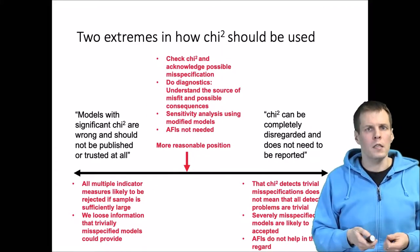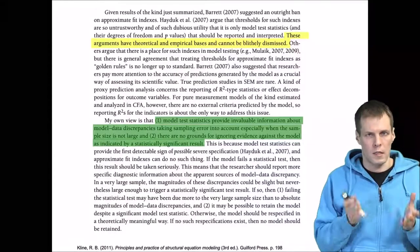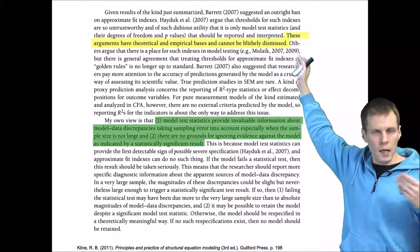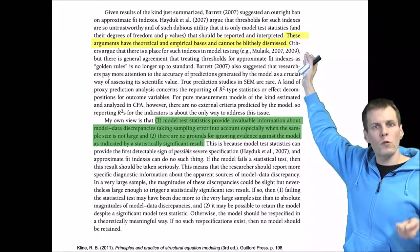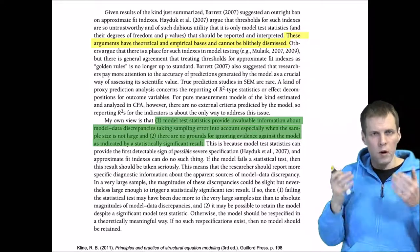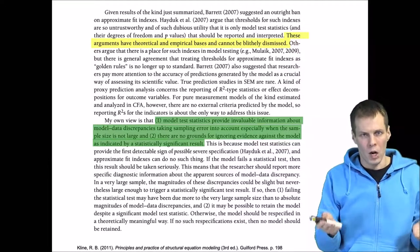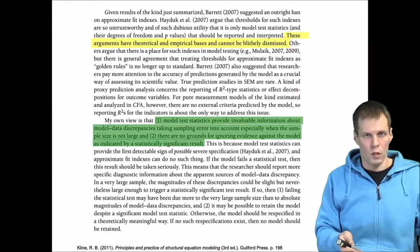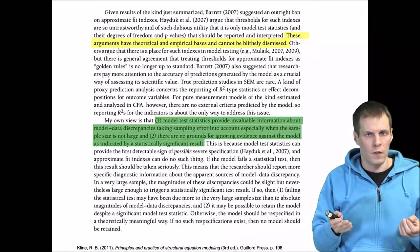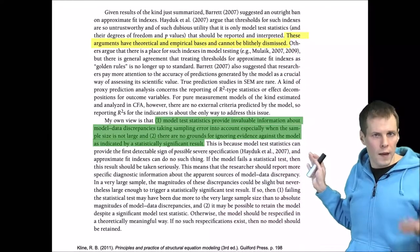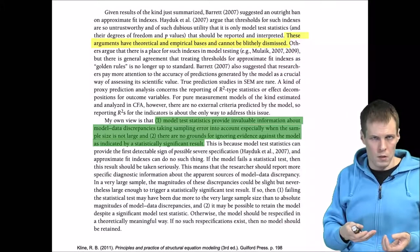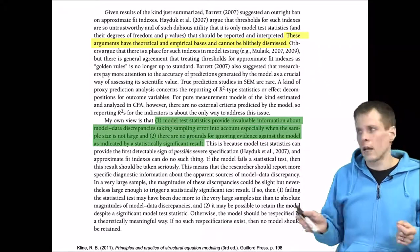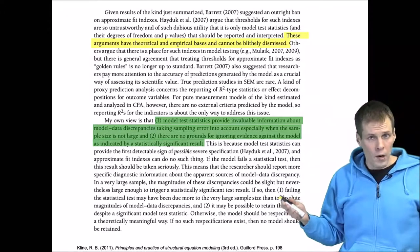Klein summarizes these arguments well in his book, chapter 8, and concludes there is enough evidence to show that alternative fit indices don't detect all serious model misspecifications. It is possible to have a severely misspecified model where CFI is still above 0.95 — so CFI above 0.95 does not rule out serious misspecification. His position is close to the instructor's: the chi-square provides useful information. If it doesn't reject the model, we know the covariance fit is very good; if it does, we need diagnostics to understand the source of misspecification.